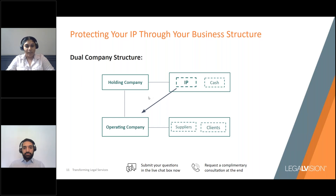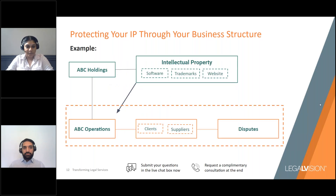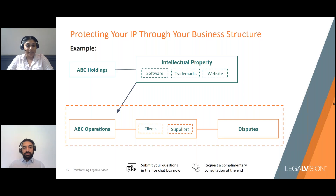Take a software business as an example. ABC Holdings owns the software, registered trademarks and website. ABC Operations receives a licence to use these for the purposes of operating the business. If ABC Operations breaches an agreement with a supplier and that supplier makes a claim, ABC Operations' liability is limited to only the assets that company holds. Because the IP is held by ABC Holdings, the supplier cannot make any claim against it — so the IP is protected regardless of what happens in the dispute between ABC Operations and their supplier.